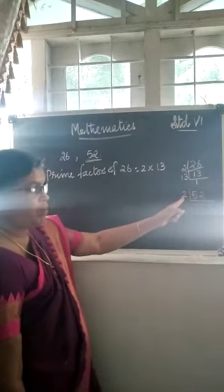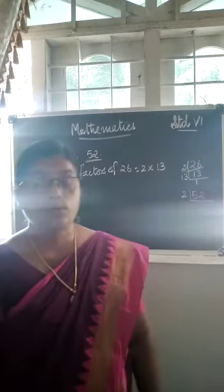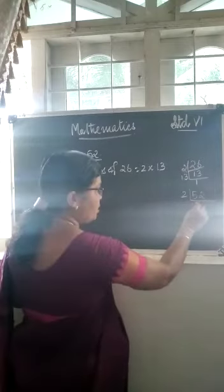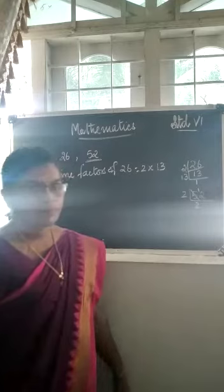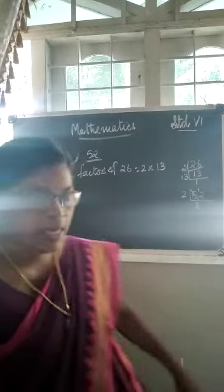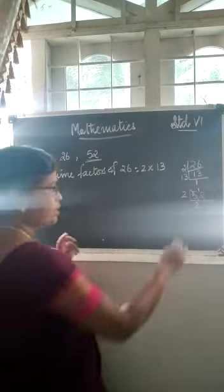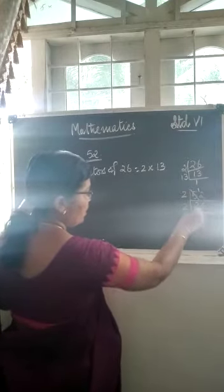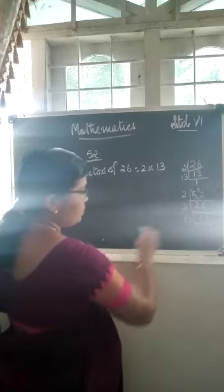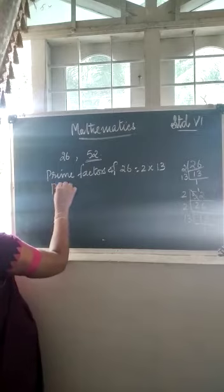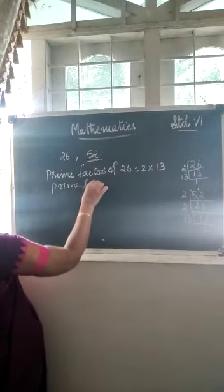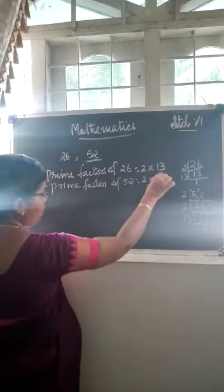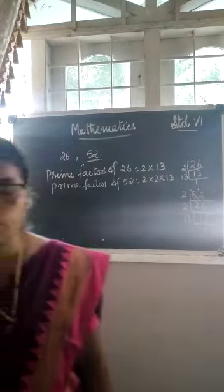So let us divide. From 5, how many 2's can be taken? 2 twos are 4. We have only 5, so let us take two 2's — 2 twos are 4, and the balance is 1. Then in 12, how many 2's? 6 times — six 2's are 12. Now we got 26, divided by 2 gives 13. Again by 13, we get 1. So the prime factors of 52 are 2 into 2 into 13.